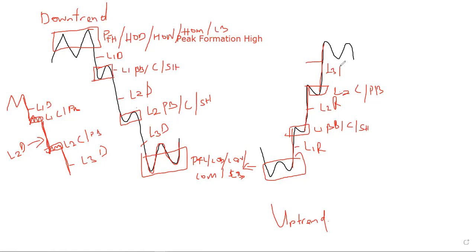After the consolidation period, market will rise again — it enters the level two rise. After exhausting that, it enters another consolidation region — level two consolidation — and then it grows up one more time in a big way to give us our level three rise.